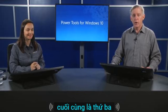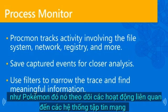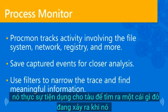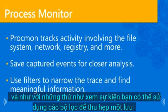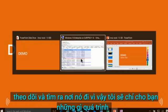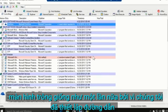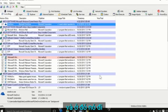The third of the big three Sysinternals utilities is Process Monitor, affectionately known as procmon. It tracks activity involving the file system, network, registry, and more. You can save all of this information — it's really handy for figuring out when something is writing to the registry but you don't know exactly where. As with Event Viewer, you can use filters to narrow down a saved trace. Since we've already set up the path, I can just type 'procmon' and there it goes.